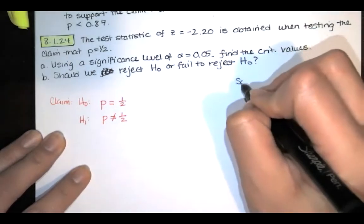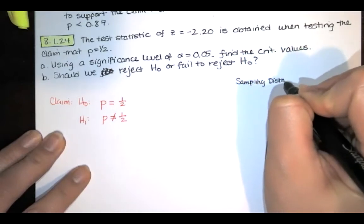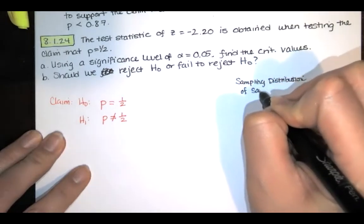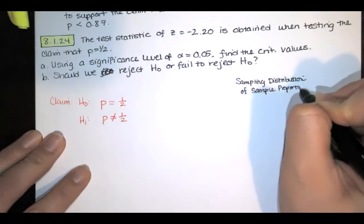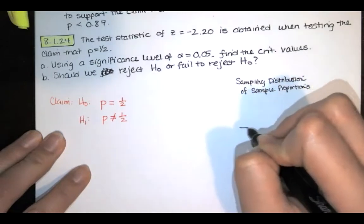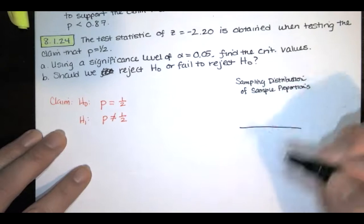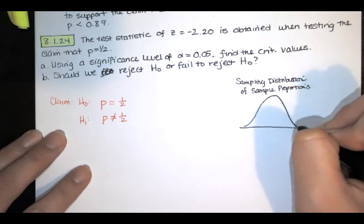So when I draw my sampling distribution of sample proportions, that's P hat. We're imagining we took a bunch of samples, all of the same size. And for each sample, we computed a P hat, a sample proportion. And then we looked at the distribution of all of those P hats, and we got something that looked like this.